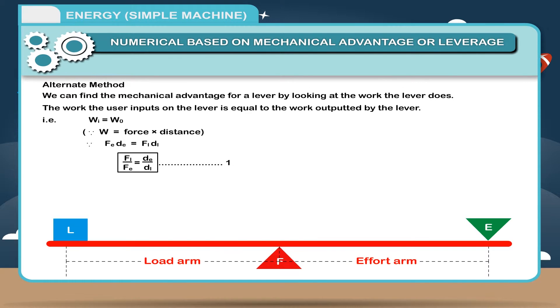FI upon FE is equal to DE upon D1. Since mechanical advantage is equal to load force divided by effort force, therefore, from equation 1, mechanical advantage is equal to DE upon DI in terms of distance alone.